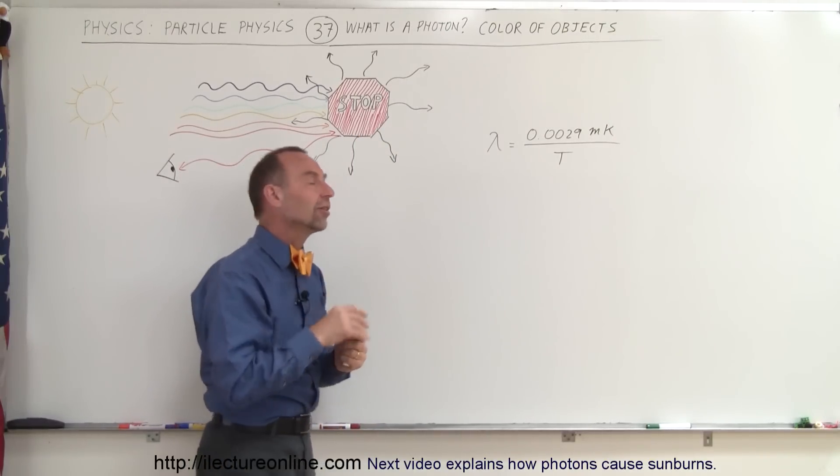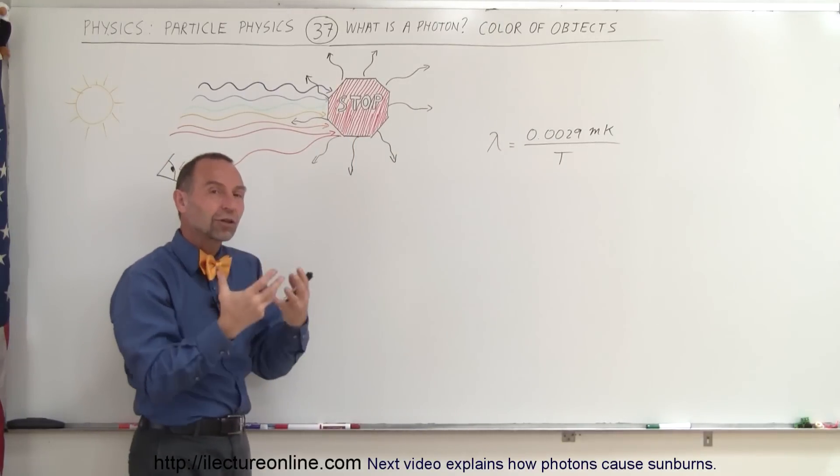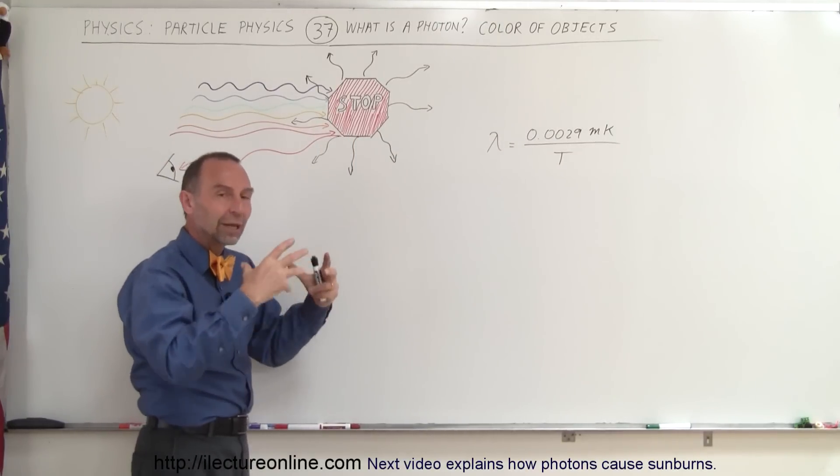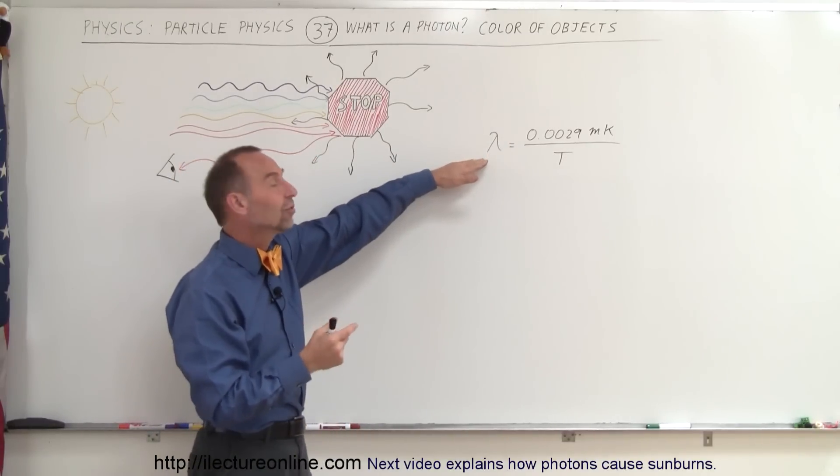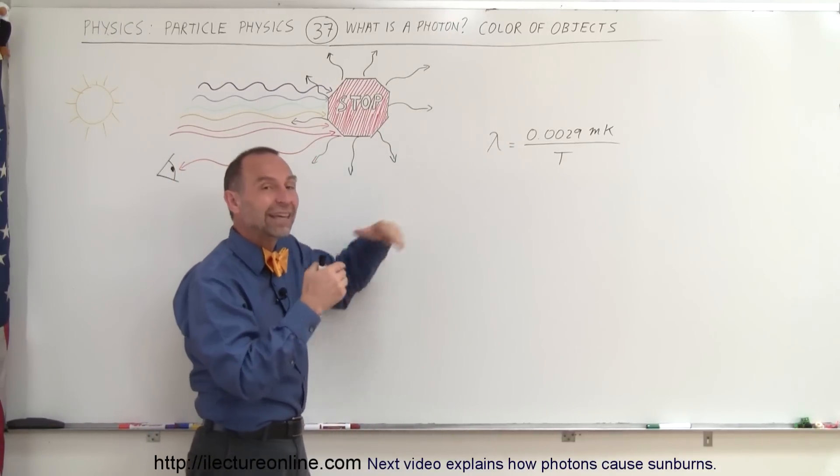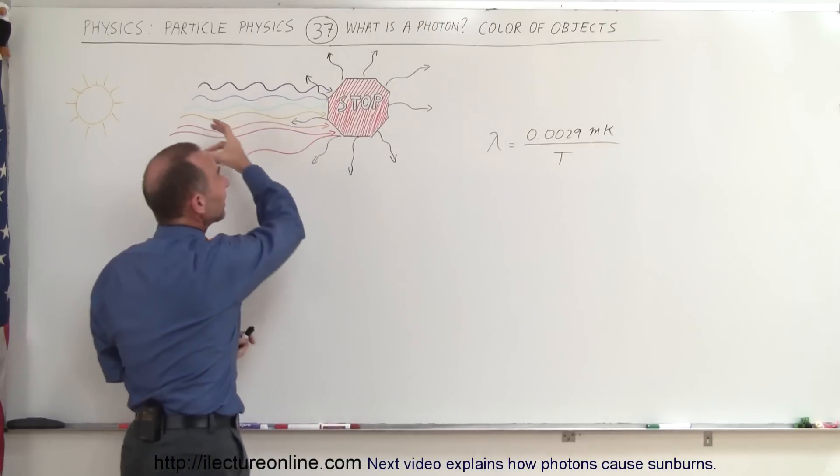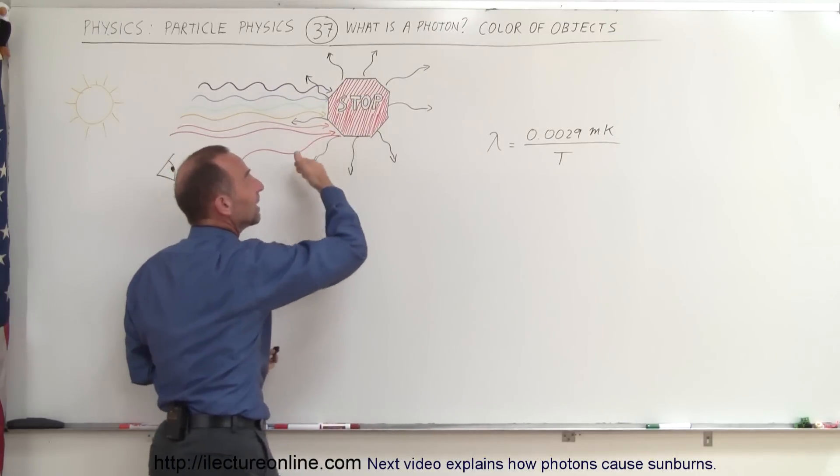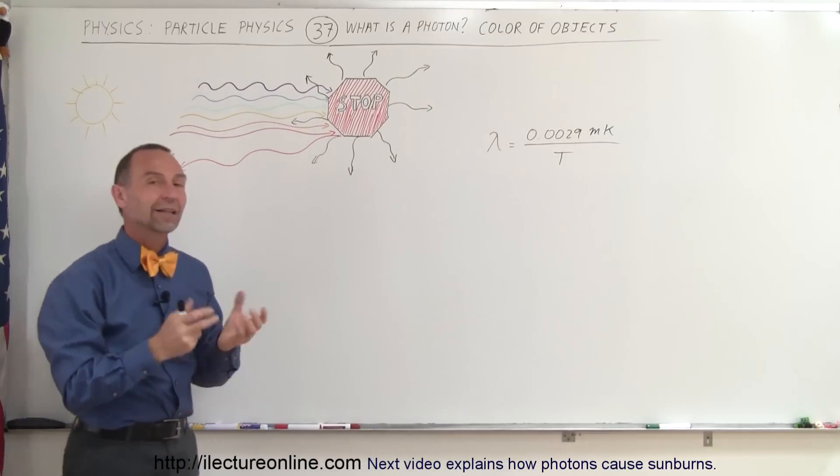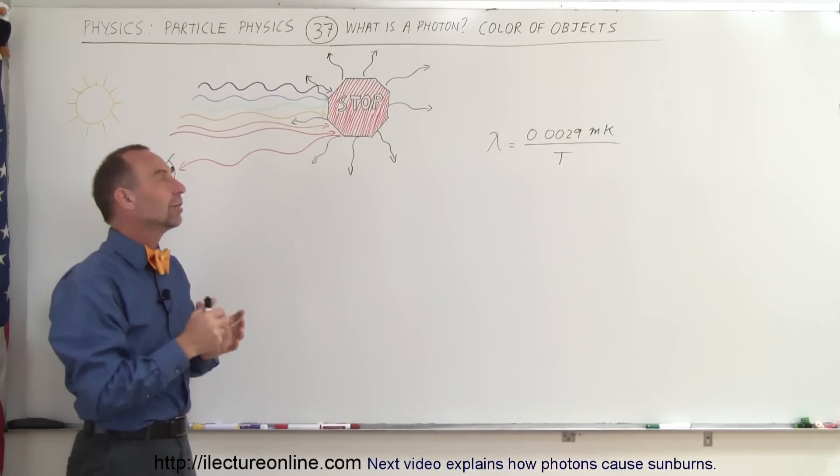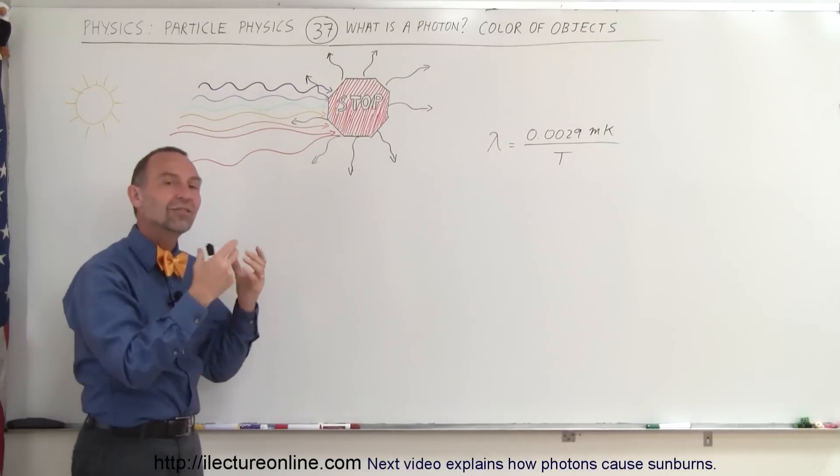So as more and more sunlight is incident on the stop sign and only the red light is reflected so that the other colors are absorbed, the stop sign will get warmer and warmer. As it gets warmer it will continue to give off wavelengths of shorter and shorter wavelengths carrying away more and more energy from the stop sign until the incident energy of the sunlight equals the exit energy of the radiation coming off the stop sign. So then the stop sign will reach an equilibrium point in temperature so that the incident energy and the exit energy is equal to each other.